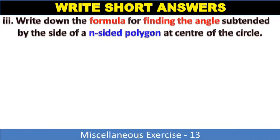Question number three: Write down the formula for finding the angle subtended by the side of an n-sided polygon at center of the circle. Formula is 360 degrees divided by n.